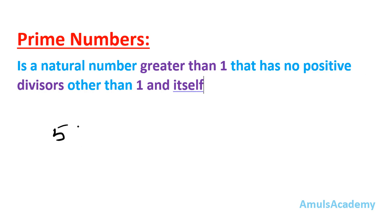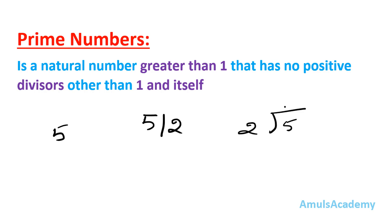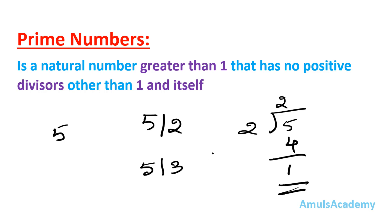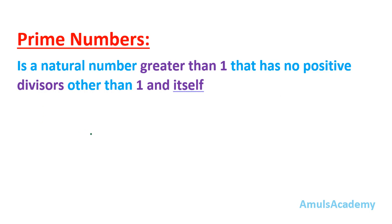For example, 5 is a prime number because 5 is a natural number greater than 1 and it doesn't contain any positive divisor other than 1 and 5. If I try to divide 5 by 2, I get 1 as remainder, so 5 is not divisible by 2. If I try to divide 5 by 3, I also get a remainder. Only if we divide 5 by 1 or 5 do we get remainder as 0. So number 5 doesn't contain any other divisor except 1 and itself, making it a prime number.